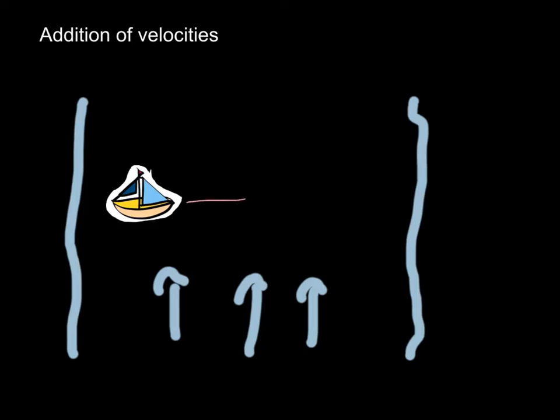But the river is moving this direction as our little boat is trying to get across. So let's say our boat is traveling this way at 4 meters per second, and our river is moving with the speed of 2 meters per second.